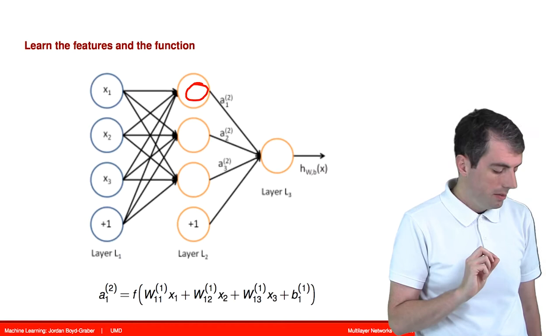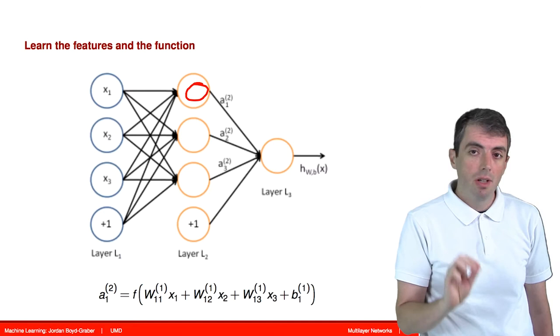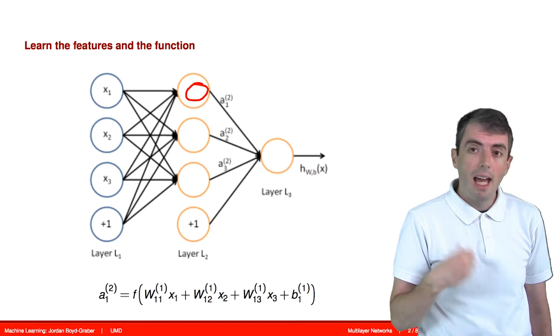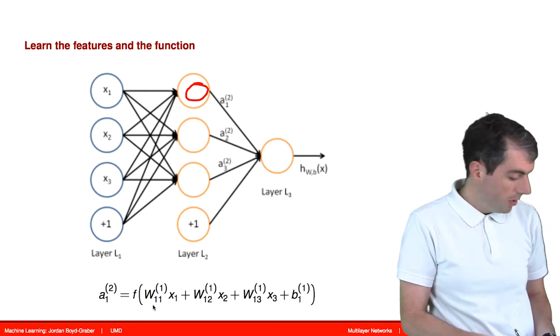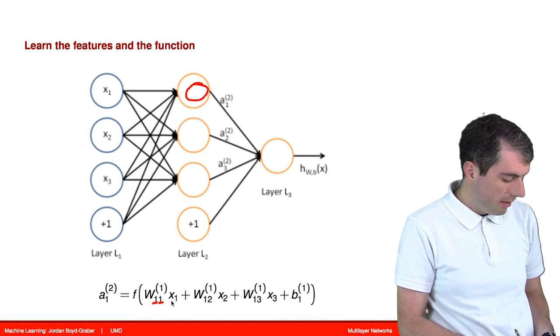That gets multiplied by some weight vector w, and then you add in a bias. So this internal node has its own set of feature coefficients, w, and we're going to use the same subscripts and superscripts as before.